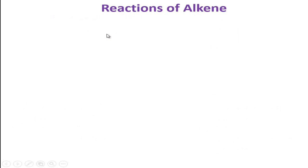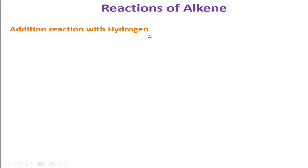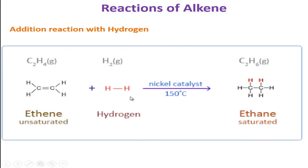Now we will know about the reactions of alkene. Alkene is highly reactive because of the weak pi bond, so it shows different types of reaction. For example, addition reaction with hydrogen: alkene combines with hydrogen in the presence of nickel catalyst at 150 degrees centigrade to produce ethane. The double bond is broken down and the two hydrogen atoms are added to the two carbon atoms, forming the single bond compound ethane.